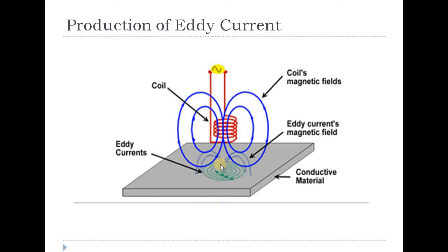When the conducting plate is placed near the coil, the magnetic field produced by the eddy currents reduces the magnetic flux of the coil and therefore reduces the inductance. The closer the plate, the greater the eddy current effect and the more the inductance is reduced. This is the production of eddy current principle used in inductive transducers.